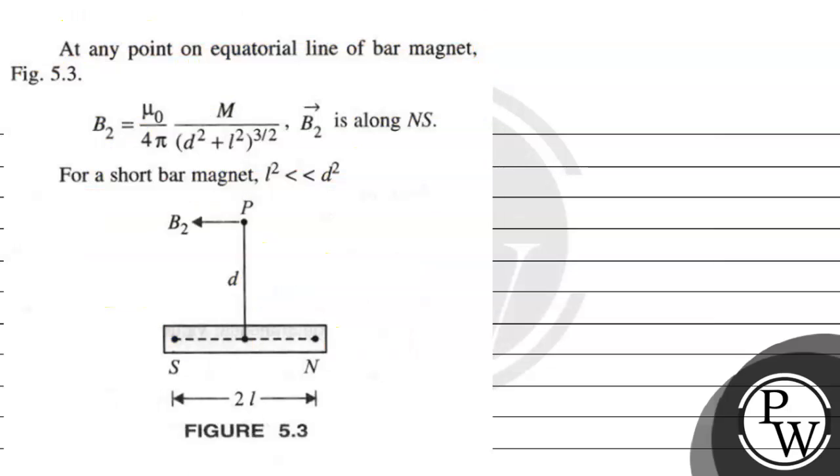On the other hand, they are saying that at any point on equatorial line of a bar magnet, which refers as figure 5.3. So this is our bar magnet and the equatorial point here is B2. And this B2 is mu naught upon 4 pi, m upon d l square plus l square, 3 upon 2, which is B2 vector, which is the direction along NS.